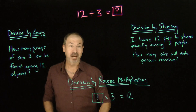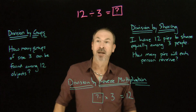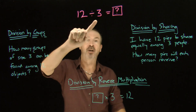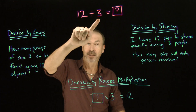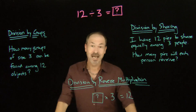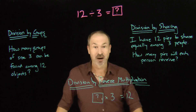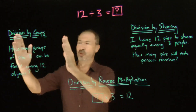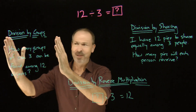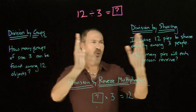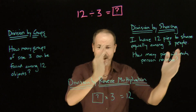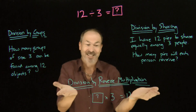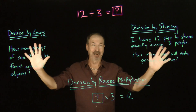And here's the third interpretation: division by sharing. Suppose I have 12 pies to share equally among three people — how many pies would each person receive? That's division by sharing. In the math-ed world, the first is called quotative division, the second is partitive division, and the third is reverse multiplication — very scary jargon.